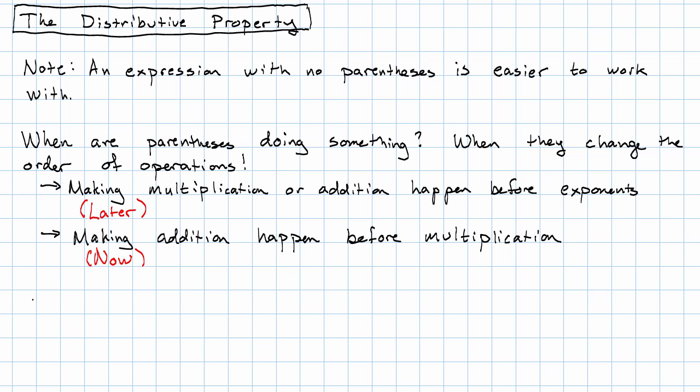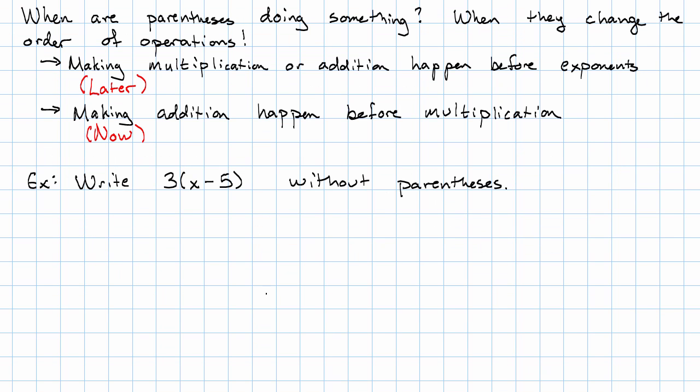Let's say we wanted to write the expression 3 times x minus 5 without parentheses. Well, first I want to write everything as just multiplication and addition. So, 3 times x plus negative 5. And now we know a property that tells us about how we could do the multiplication first. Namely, we distribute the 3.